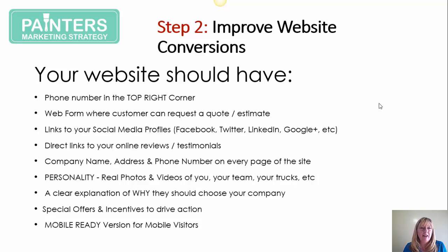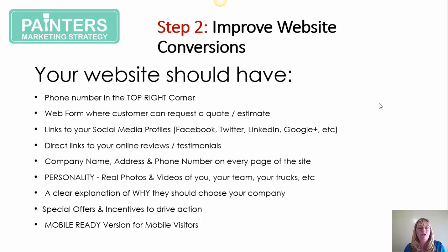To improve your website conversion, ideally you should have your phone number very visible on every page. I like to include the business phone number in the top right corner, preferably in the header. Have a web form where customers can request a quote or estimate. Include links to your social media profiles — Facebook, Twitter, LinkedIn, Google Plus, etc. Add direct links for online reviews on Google Maps or Yellow Pages to capture those easily and improve your search engine results. You need your company name, address, and phone number on every page — this is referred to as your NAP.